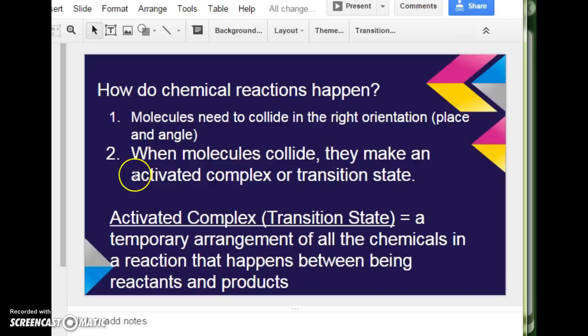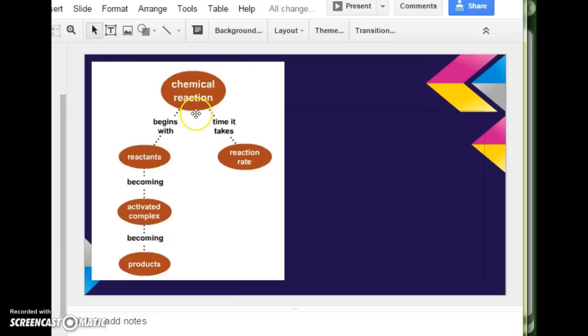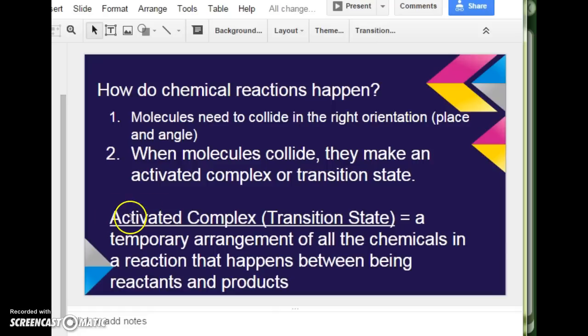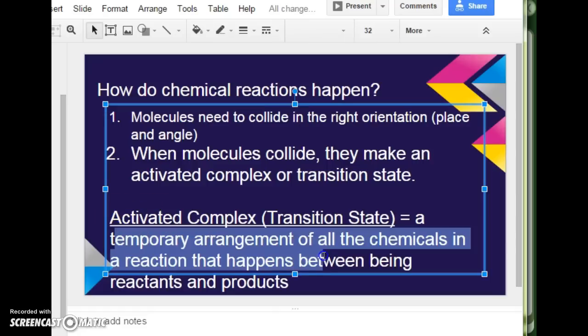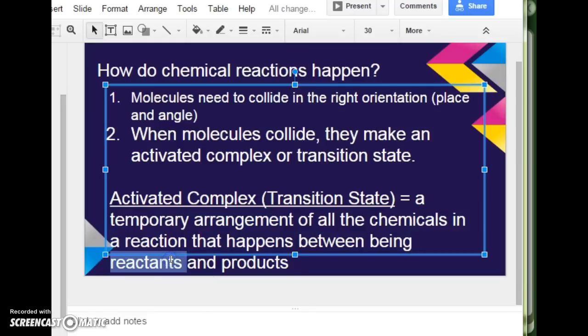Number two, when molecules collide, they make an activated complex or transition state. So, activated complex and transition state mean the same thing. An activated complex or transition state means a temporary arrangement of all the chemicals in a reaction that happens between being reactants and products. So, make sure you have this all written down. So, a chemical reaction, it takes time, and that was reaction rate, which we talked about in a previous lesson. A chemical reaction begins with reactants. They become an activated complex. And then, they become the product. So, so far, we've just been saying reactants turn into products. And we've been skipping the fact that, well, there's actually a middle step. And that middle step is the activated complex, which is a temporary arrangement of all the chemicals. In other words, they make a big glob. So, they start out separately as reactants. They make a big glob. And then, they separate and become products.